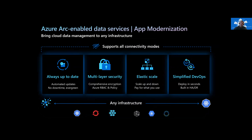Azure Arc enabled data services brings the best of Azure cloud data management capabilities to any infrastructure, no matter where that infrastructure lives. It can extend to your own on-premise data center, other public clouds, and even at the edge, delivering a consistent experience across your data workloads. With Arc-enabled data services and app modernization, you can minimize disruptions and maintain fully up-to-date platforms with zero downtime, avoid end-of-support scenarios, get industry-leading multi-layer protection with built-in security capabilities, and scale up or down based on your application needs with no downtime. With elastic scaling, you can realize cost efficiencies by paying for only what you use without over-provisioning, and deliver a vastly simplified DevOps experience with built-in high availability and disaster recovery. All these capabilities can run in any environment regardless of connectivity to Azure.